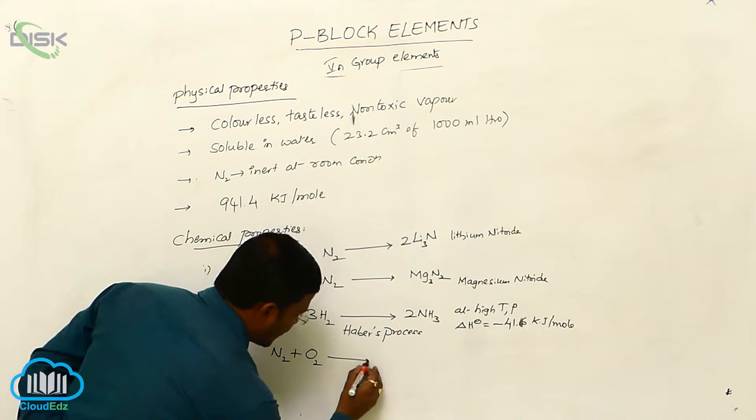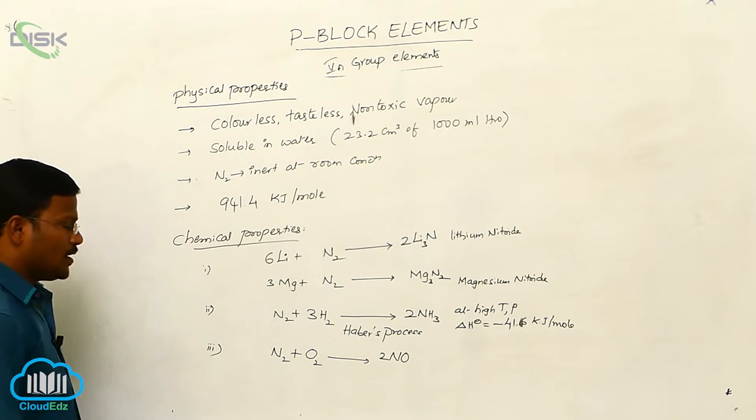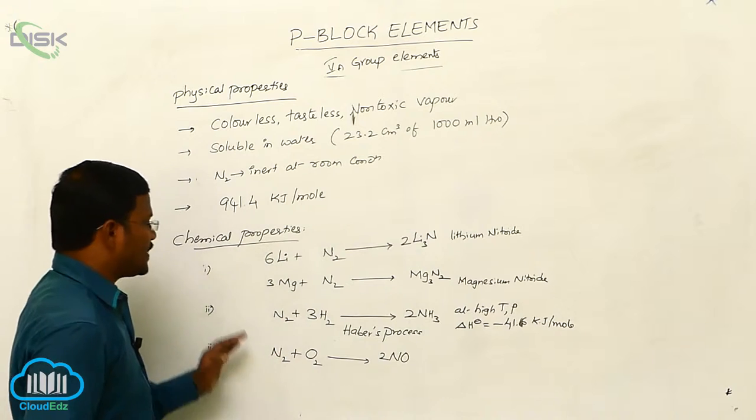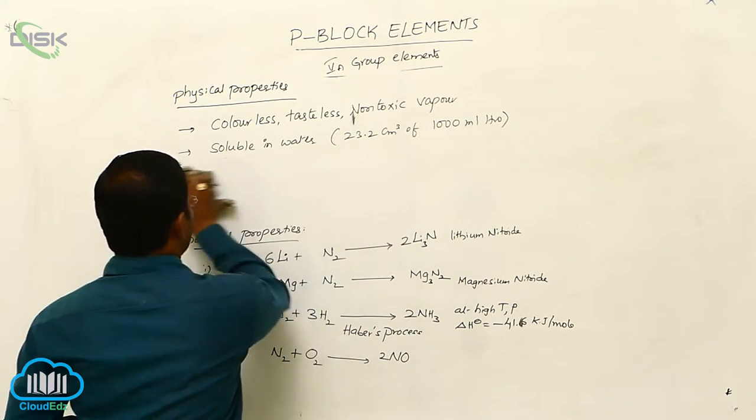The third reaction: at high temperature dinitrogen reacts with dioxygen and produces nitric oxide. All these reactions are expected to take place at high temperature only because of the inert condition of nitrogen at room temperature due to the presence of triple bond.